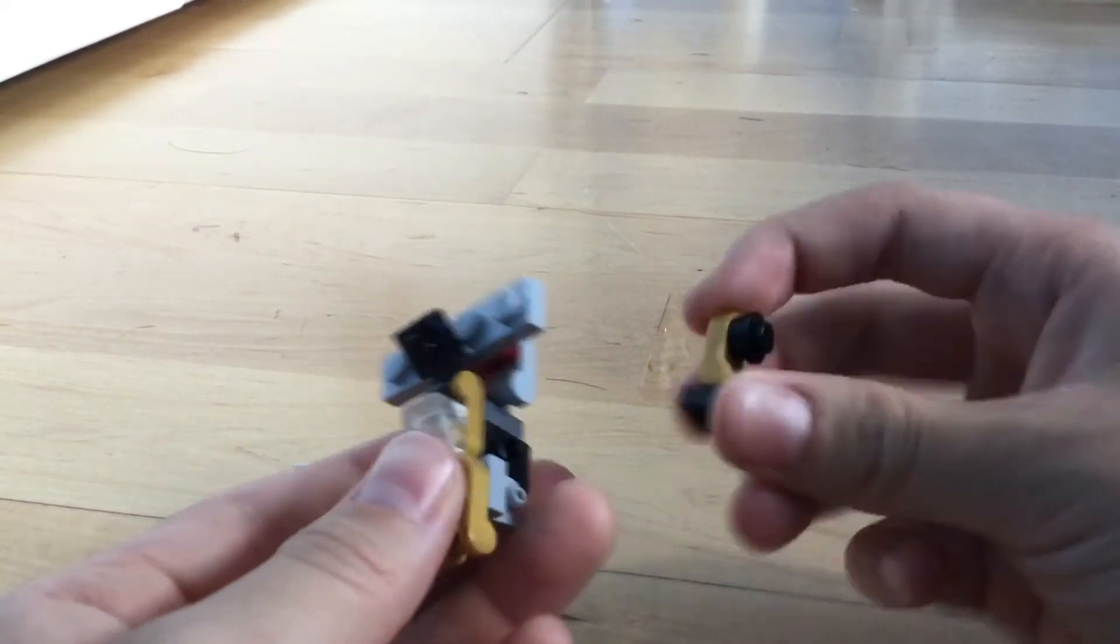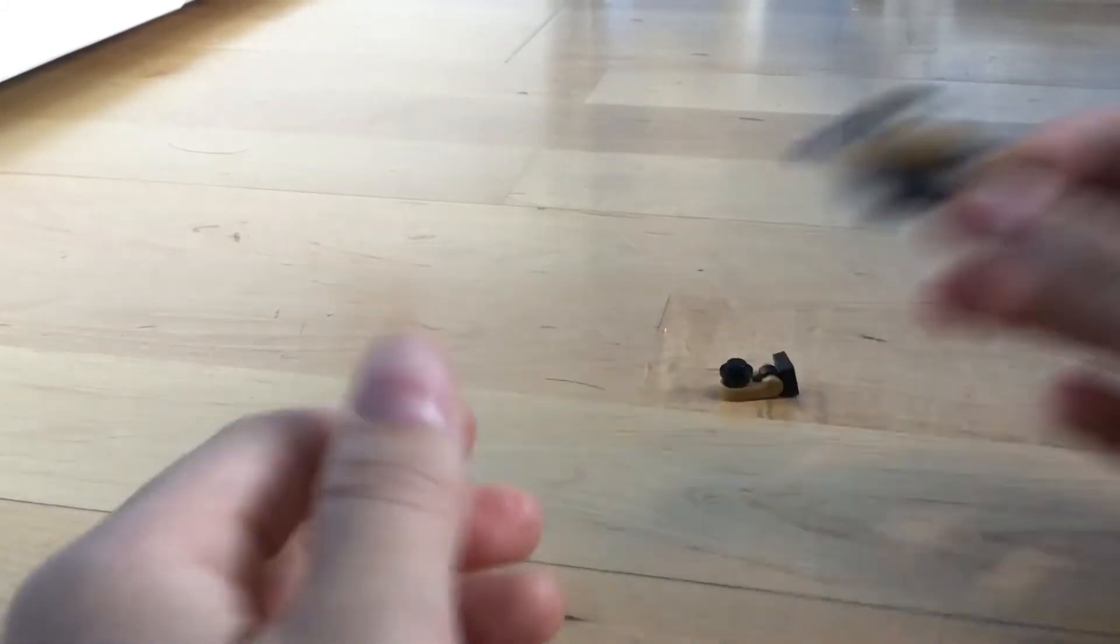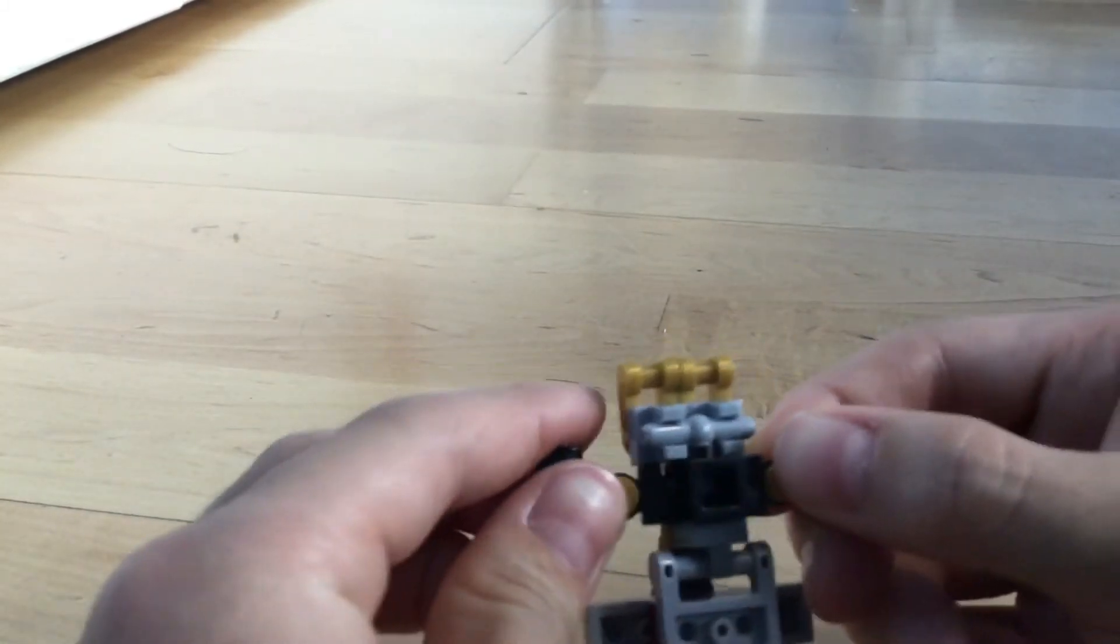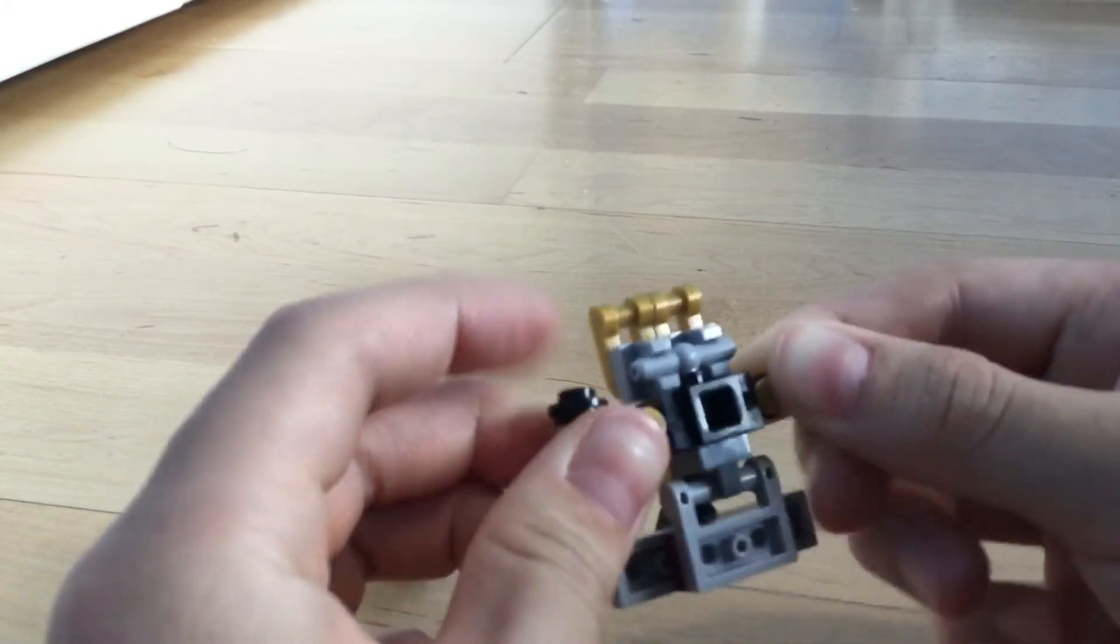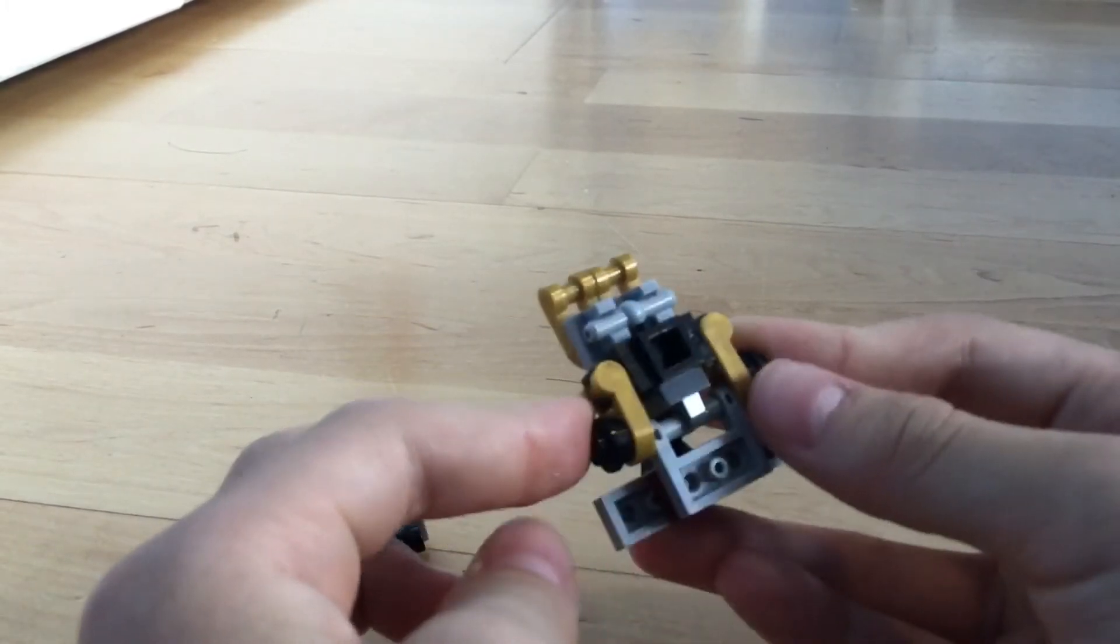And then after that, his arms here. Really easy, just put them on to the side of the Travis brick, and then fold them in like that.